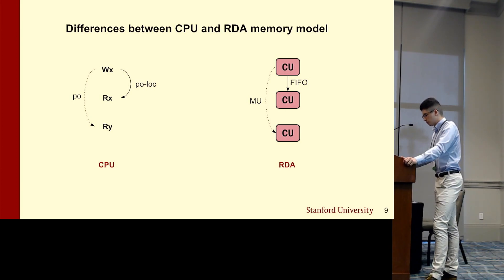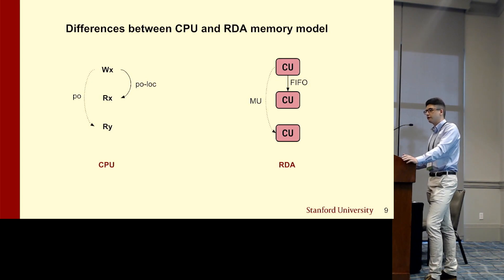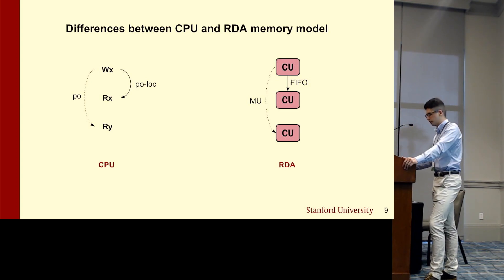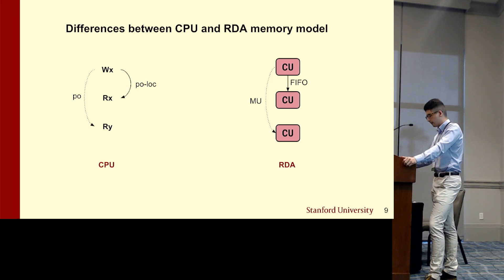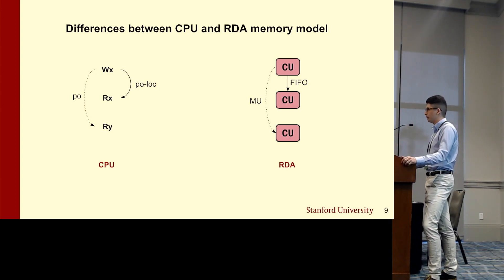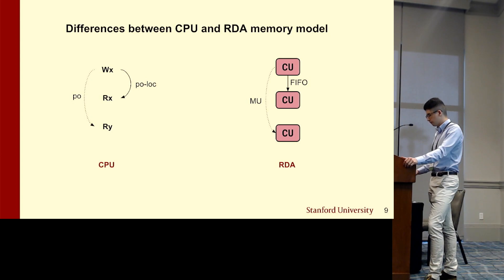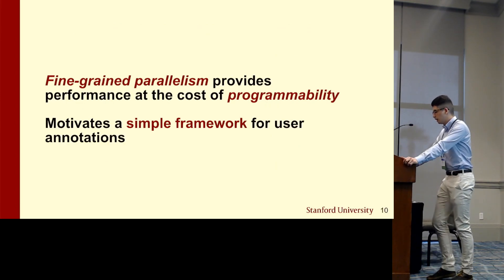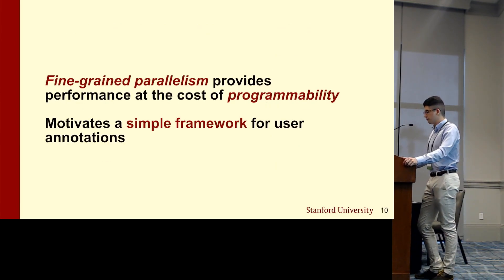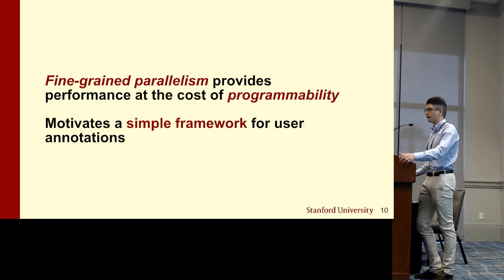But different-addressed program order generally needs additional software-defined synchronization for most architectures. RDAs exhibit several differences. There are hundreds of compute units that each enforce program order locally for a handful of memory operations. And there are also parallel FIFOs between compute units that enforce implicit FIFO ordering semantics. Beyond that, any additional communication must be done through an intermediate memory unit, at which point the software is left with all the burdens of ensuring memory correctness. And there are hundreds of such memory units, each with potentially independent and different memory ordering semantics. This is a direct consequence of RDA's emphasis on fine-grained parallelism, which can yield significant performance but often at the cost of programmability. This motivates a simple framework that allows users to provide annotations that can assist the compiler in reasoning about memory ordering correctness and improving performance.